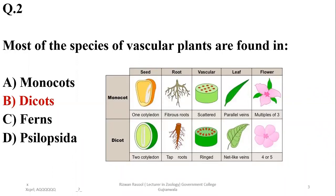Out of these 235,000 species of angiosperms, most of the species are dicot plants.